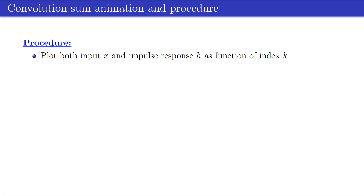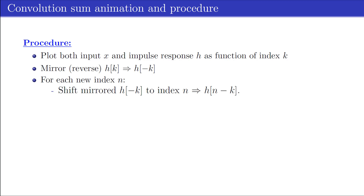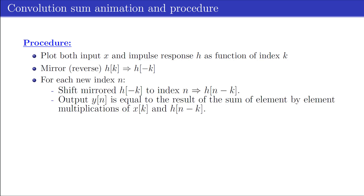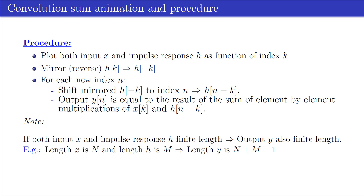The steps of the convolution sum procedure are as follows: plot both input x and impulse response h as a function of index k; mirror the impulse response around index k=0 into h(−k); then, for any new index n, shift the mirrored impulse response to obtain h(n−k); the output yn for each new index n equals the sum of the element-by-element multiplication of x(k) and h(n−k). Note that when both input x and impulse response h are finite length sequences, the output is also finite length. For example, when xn has length N and the impulse response has length M, the length of the output yn is equal to N+M−1 samples.